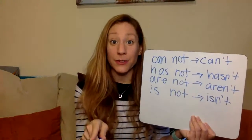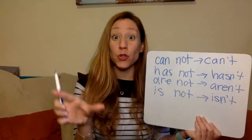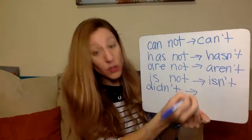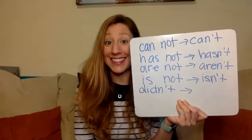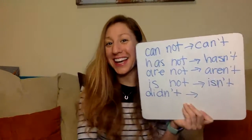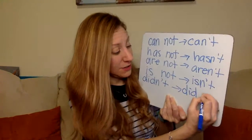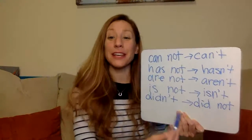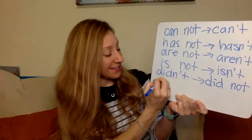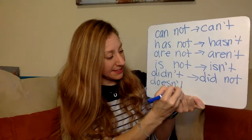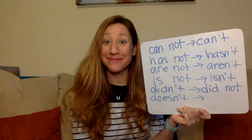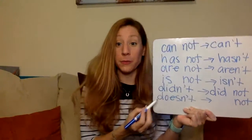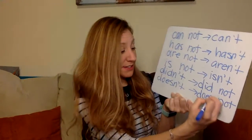Now let's see if we can switch it around. I'm going to give you the contraction and let's see if you can figure out the two words that made it. So if we had the word 'didn't' — what two words came together to make didn't? Didn't comes from 'did not.' We can separate out the contraction just like we can make the contraction. How about 'doesn't'? We know the n-apostrophe-t is 'not,' so what other word is here? Does — so doesn't comes from 'does not.'